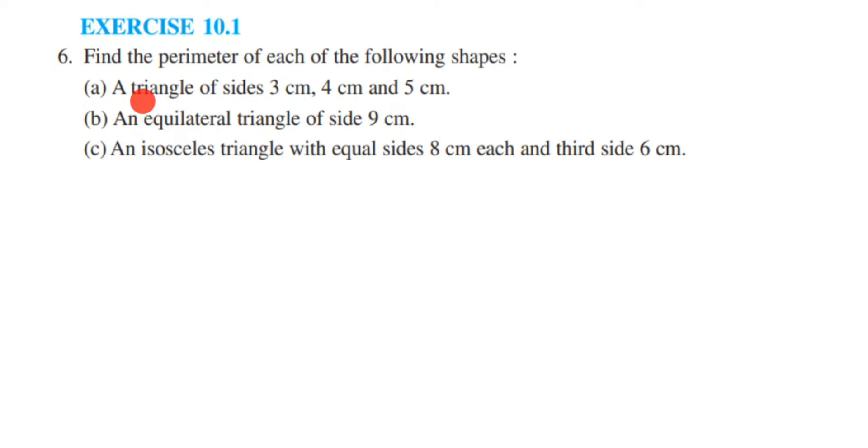First one is a triangle of side 3 cm, 4 cm and 5 cm. So all the sides are different. Since they are asking us to find the perimeter, we have to just add all the three sides.